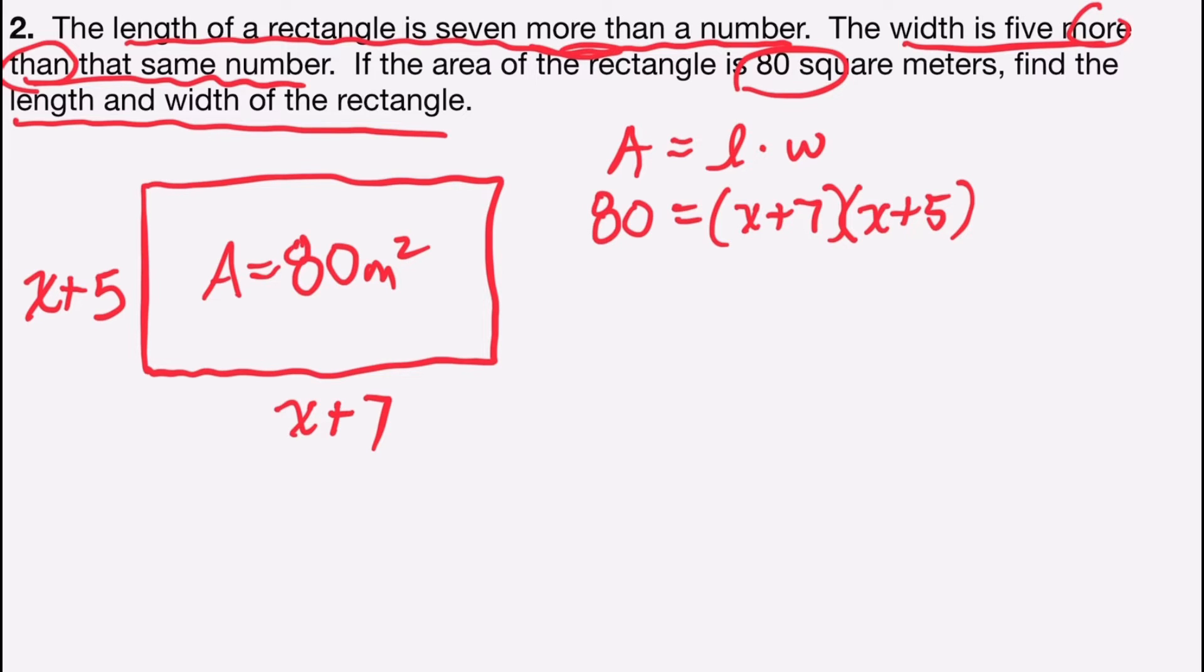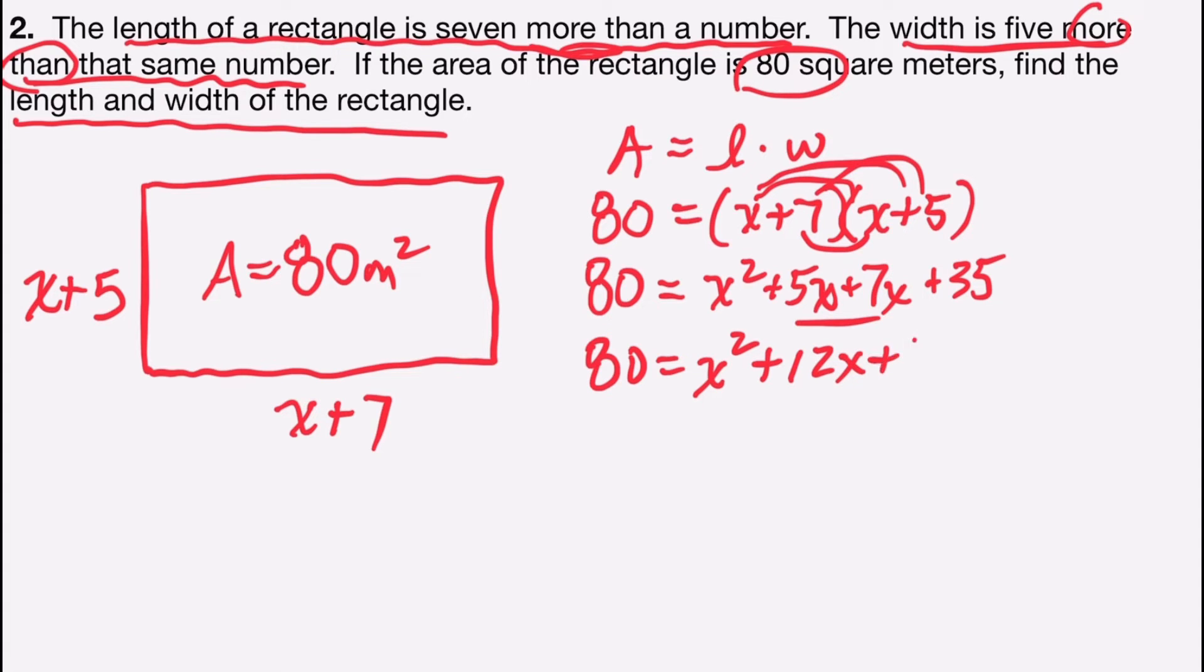So I have to use FOIL on the right side in order to simplify it. So I would have 80 equals x times x is x squared, x times 5 is 5x, 7 times x is 7x, and 7 times 5 is 35. I have some simplifying to do on the right side, so 80 will be equal to x squared plus 12x plus 35.